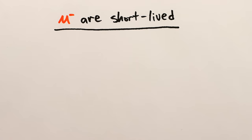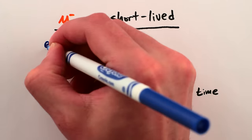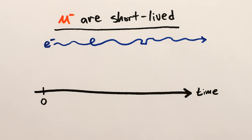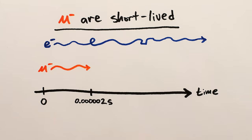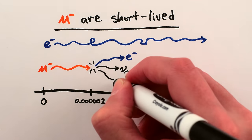First, muons don't live very long. Unlike electrons, which have an, in principle, infinite lifespan, after about two microseconds, muons spontaneously decay into an electron and some neutrinos. So if you're going to do anything with muons, you have to do it real quick.